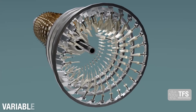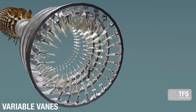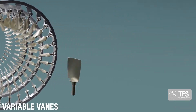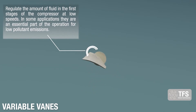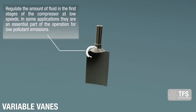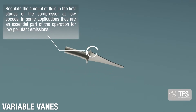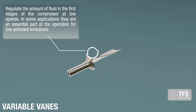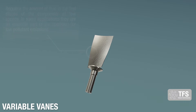Variable vanes. They regulate the amount of fluid in the first stages of the compressor at low speeds. In some applications, they are an essential part of the operation for low pollutant emissions.